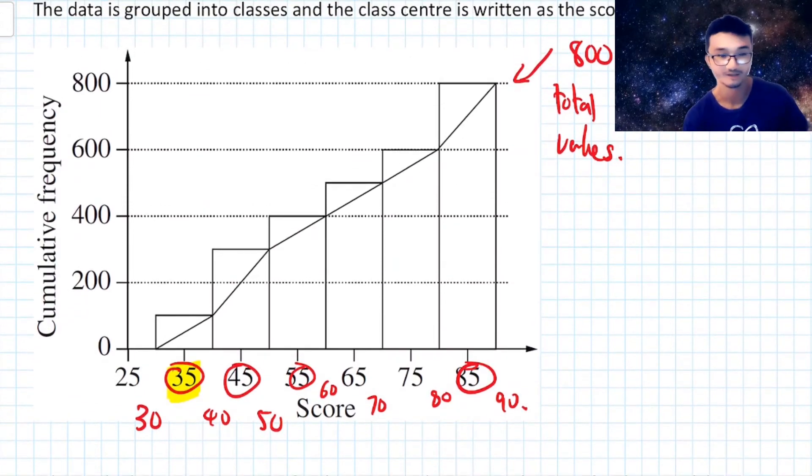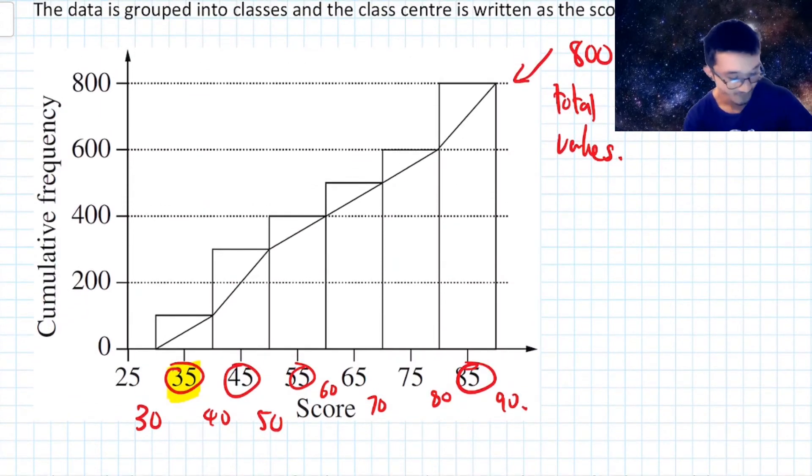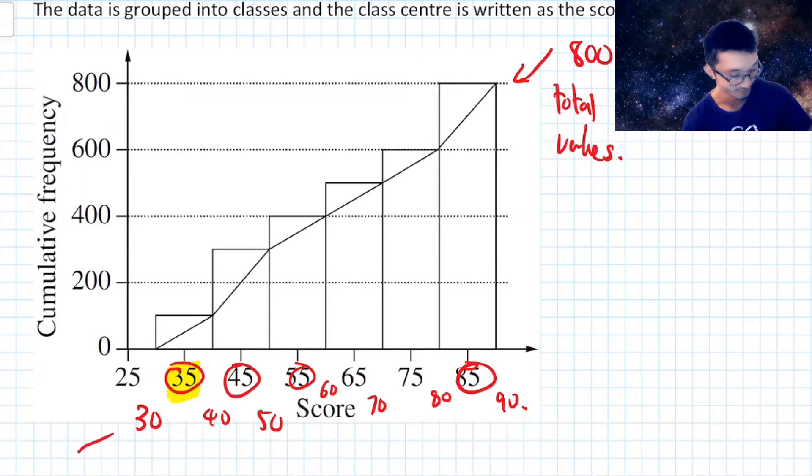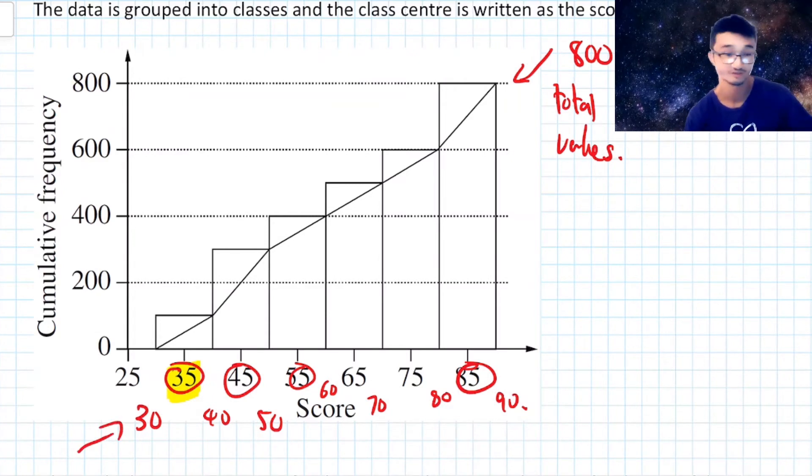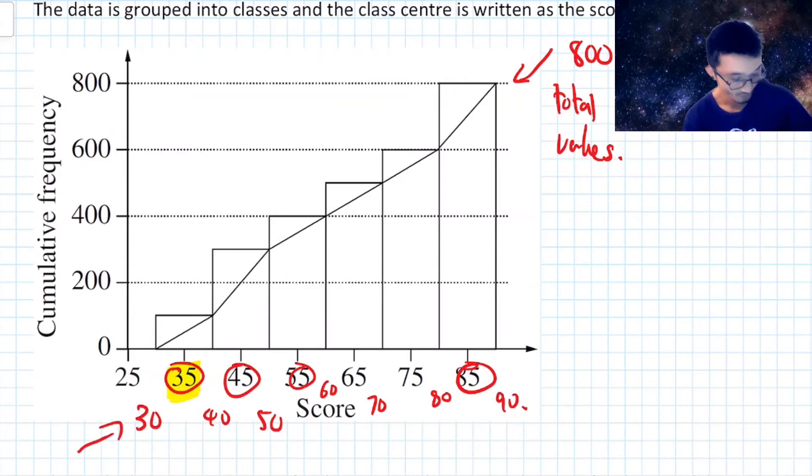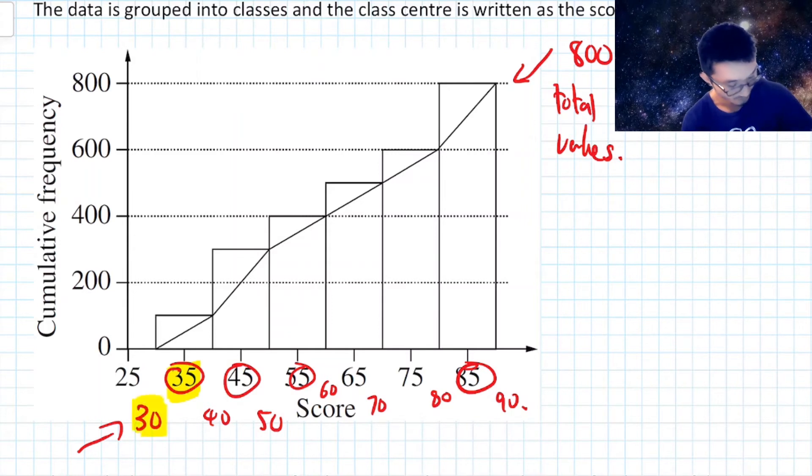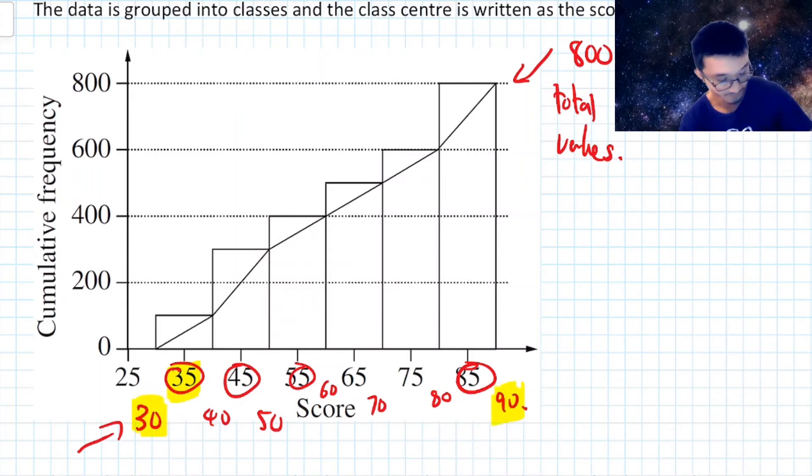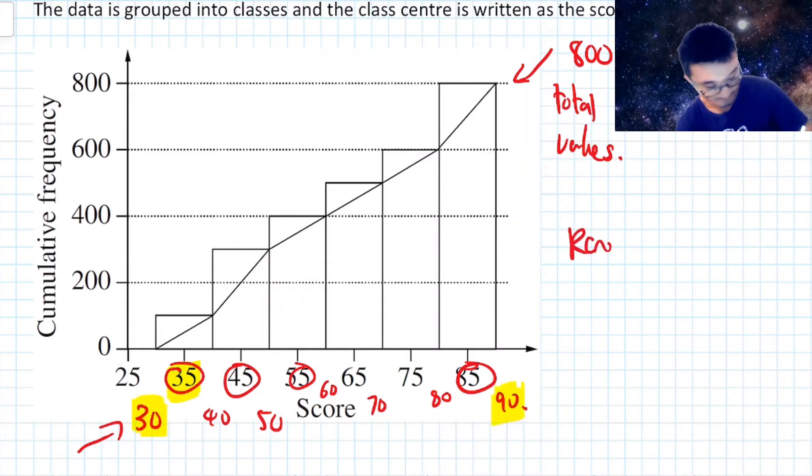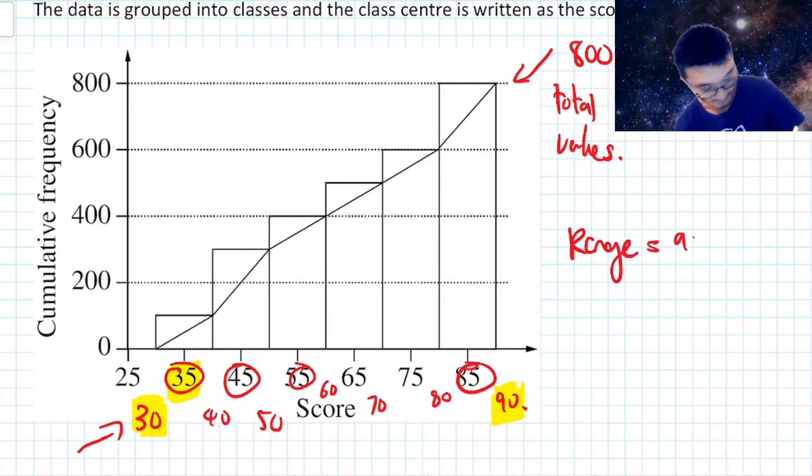So range, again, we're looking at the maximum value minus the minimum value. And although I said we don't know if 30 actually occurs into it, they're looking for an approximation. So that's okay. So what's the highest and smallest value? Well, we've got 30 and 90 here. So for the range, we'll say that's just going to be 90 minus 30, and that's going to be 60.